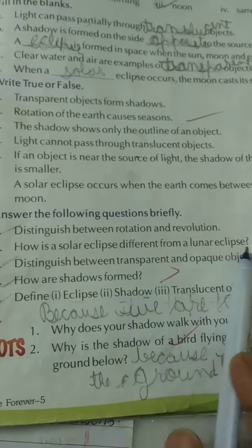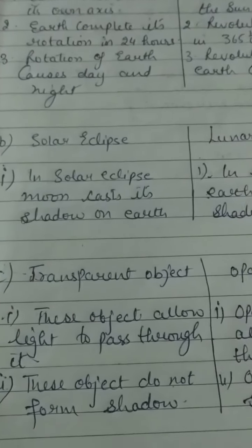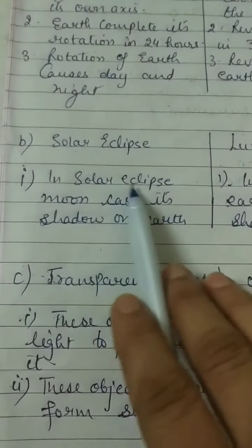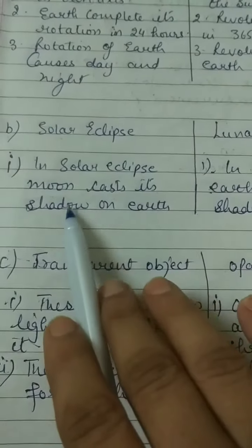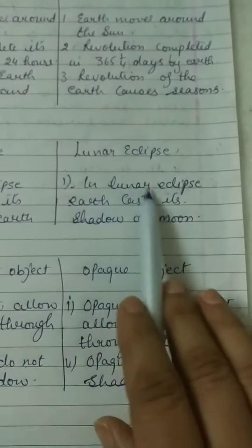Answer. Solar eclipse: In solar eclipse, moon casts its shadow on Earth.